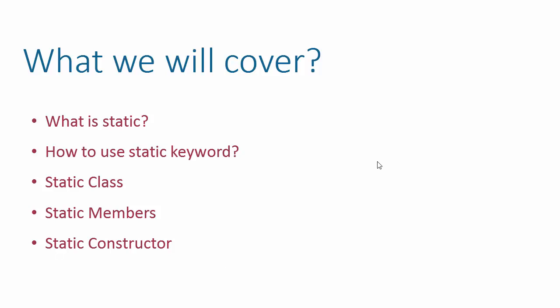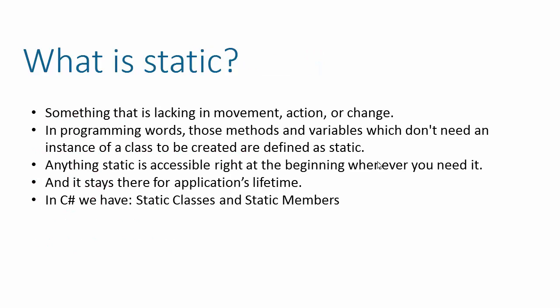To start off, let's see what is static. If we go to the dictionary, it says that static is something lacking in movement, action, or change. In C#, if anything is marked as static, on application start a memory would be allocated to that variable or method, and for the lifetime of the application that static method or variable will point to the same memory location.